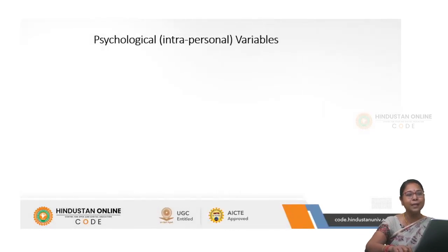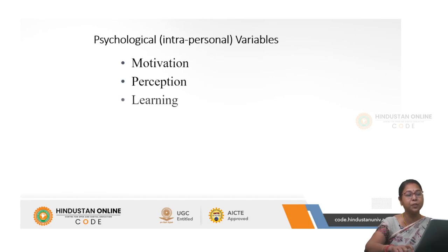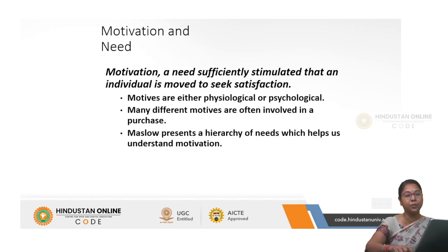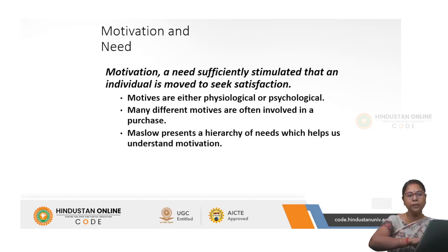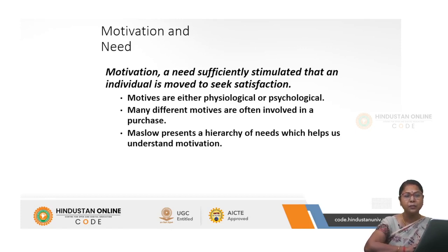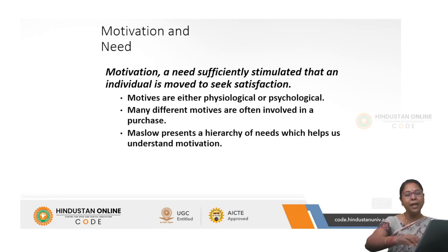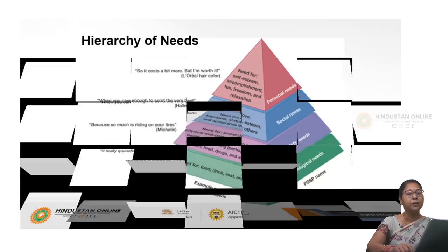So this is the model of buyer behavior. Let's now see the psychological — or intrapersonal — variables one by one: motivation, perception, learning, attitude and belief, and personality and lifestyle. Motivation is a need sufficiently stimulated such that an individual is moved to seek satisfaction. It could be physiological or psychological. Many different motives are often involved in a purchase. Maslow's hierarchy of needs helps us understand motivation.